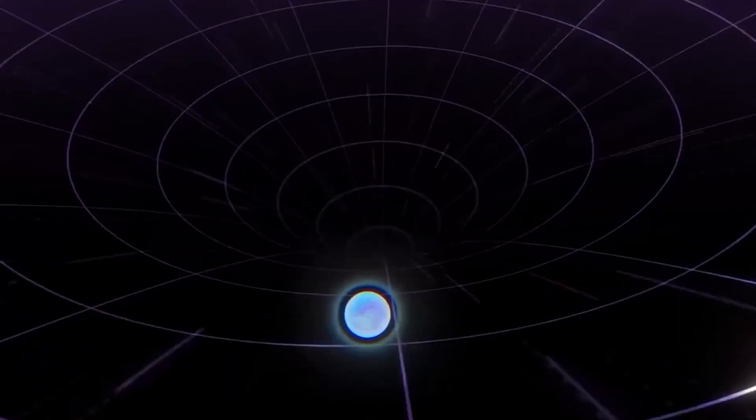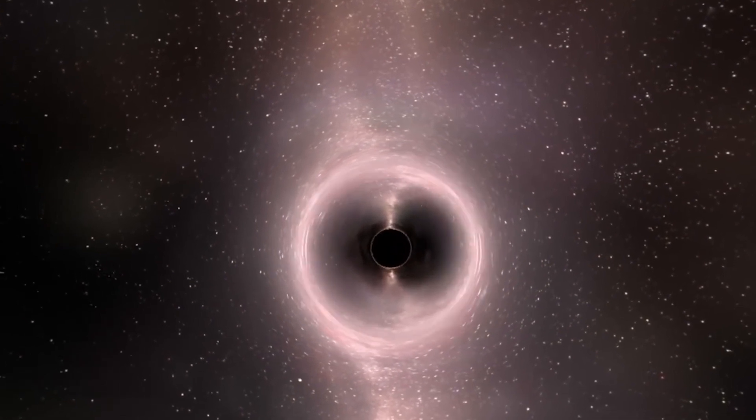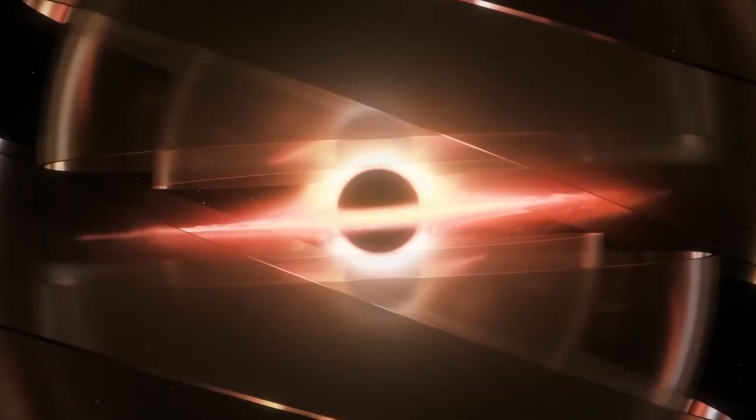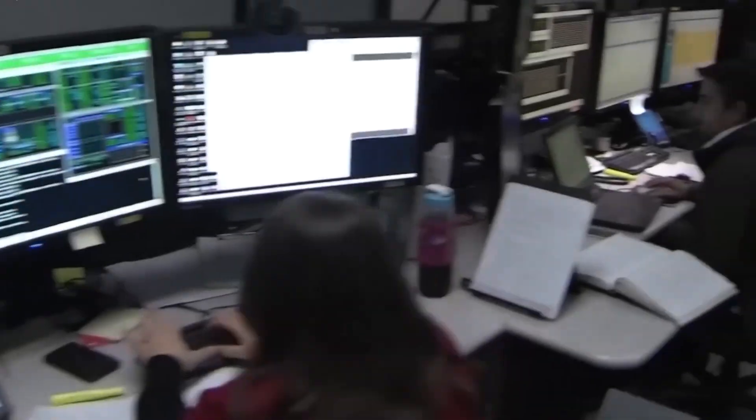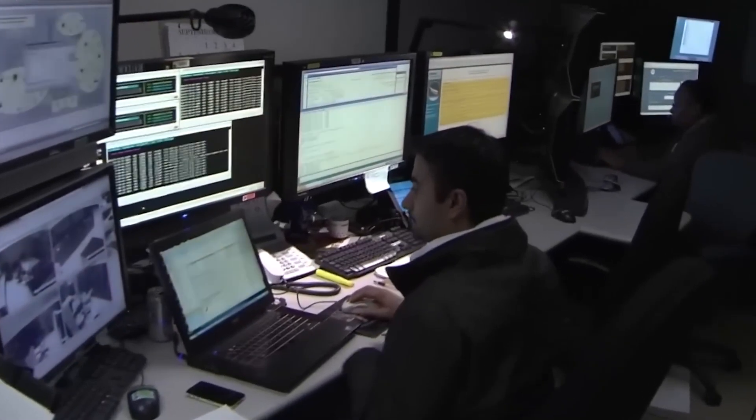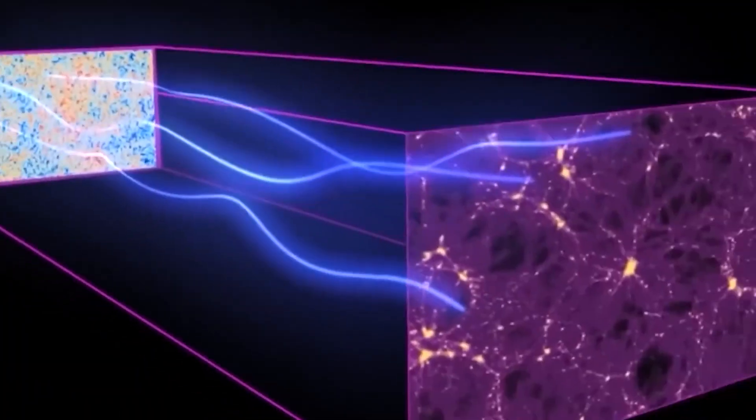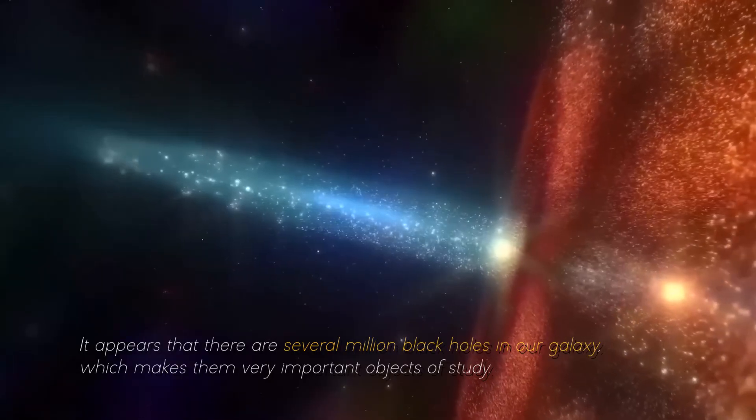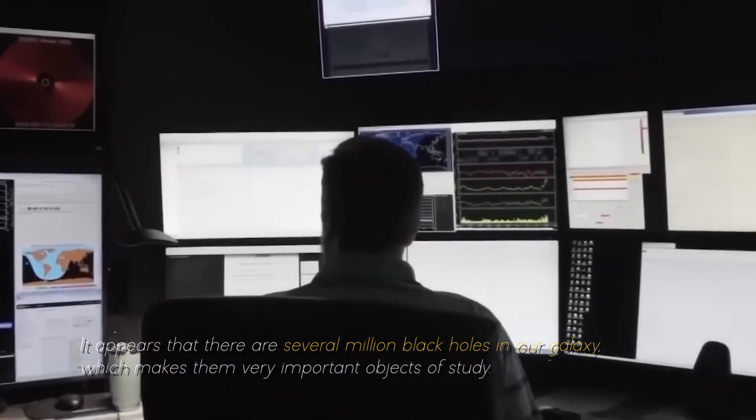This was no small discovery, as it had an incredibly high density, which gave it strong gravity. Scientists undertook the search for other black holes and discovered that there could be around 100 million of them in our own galaxy, the Milky Way. However, due to their extreme difficulty in detection, we still do not have a precise number. It appears that there are several million black holes in our galaxy, which makes them very important objects of study.